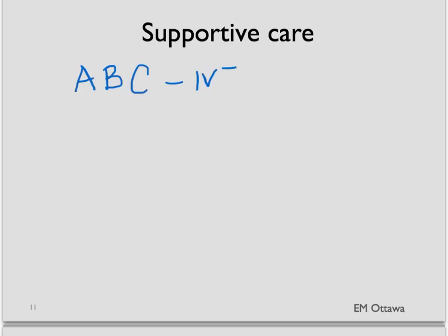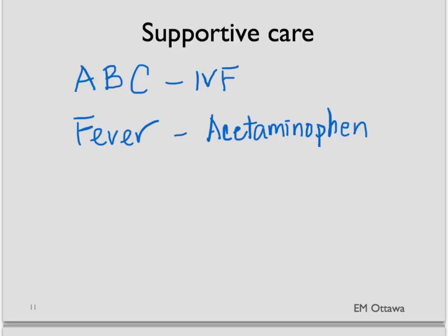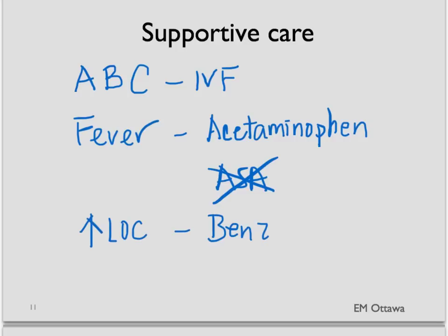In terms of supportive care, these are our usual ABCs. We make sure the airway is patent, and if needed, we intubate the patient. We give 100% oxygen. In terms of circulation, we give IV fluids to support a low blood pressure. We treat fever by giving acetaminophen — we do not use aspirin in this case. For agitation and change in level of consciousness, we give benzodiazepines, which will also work for seizures.